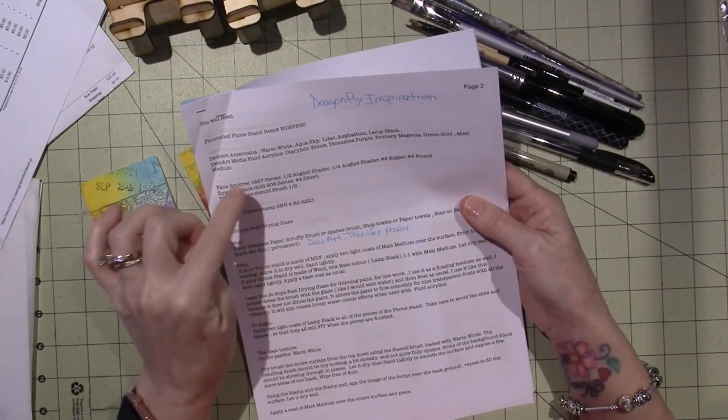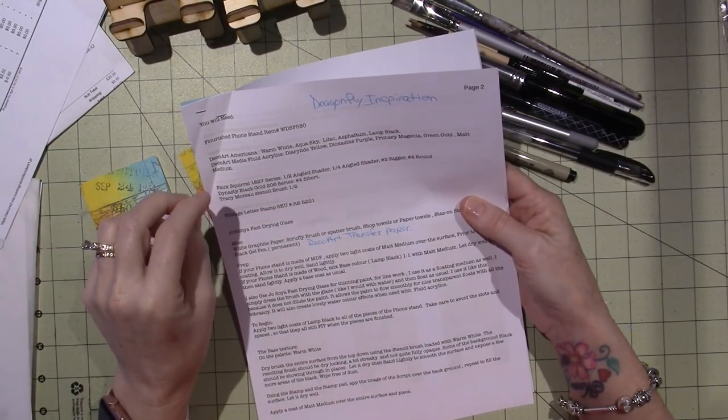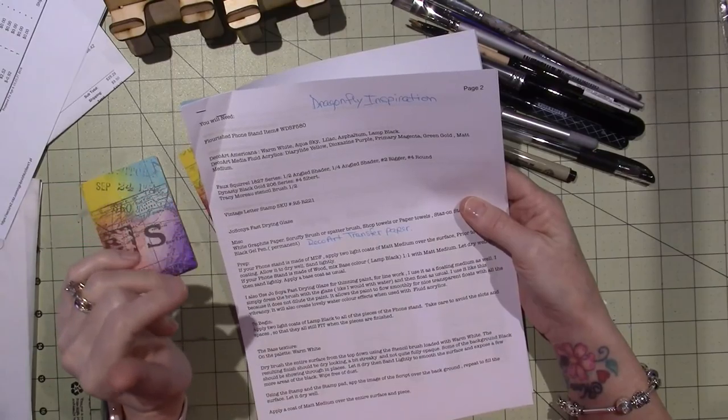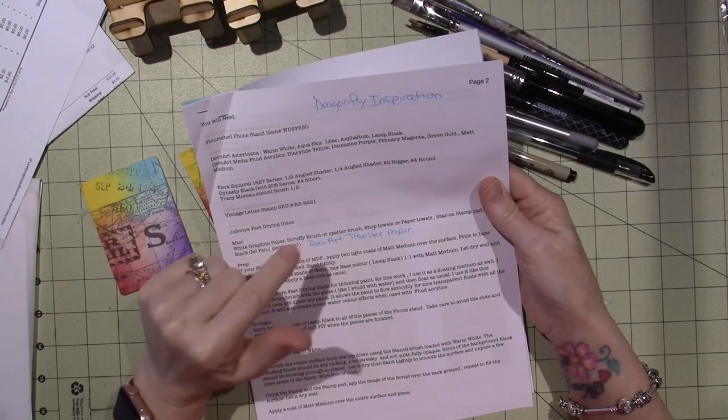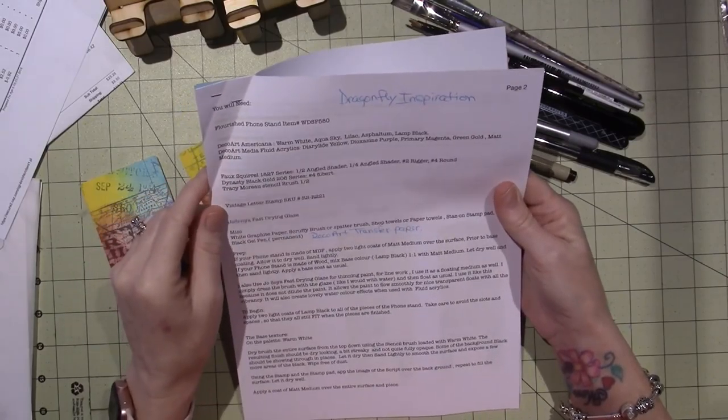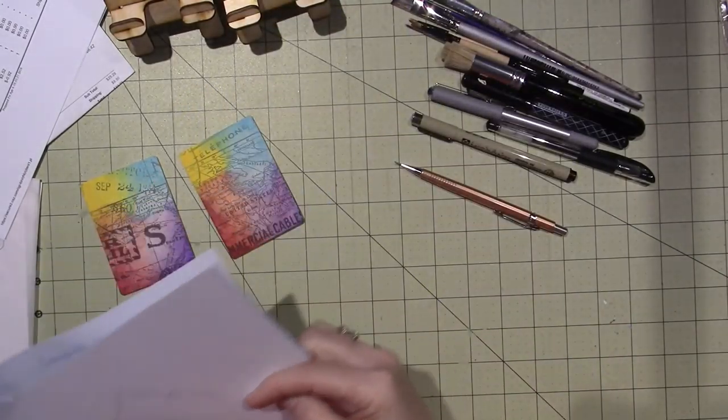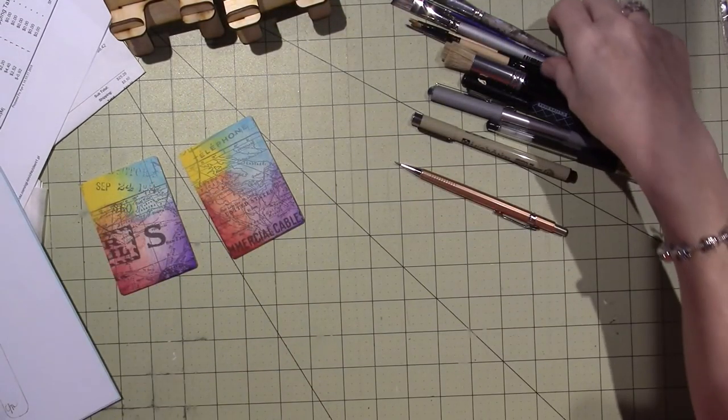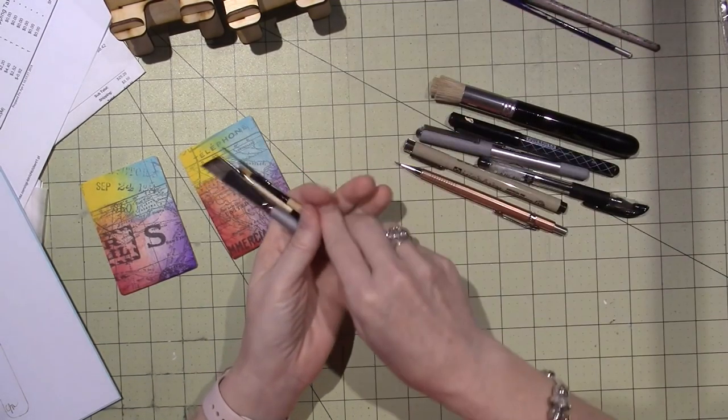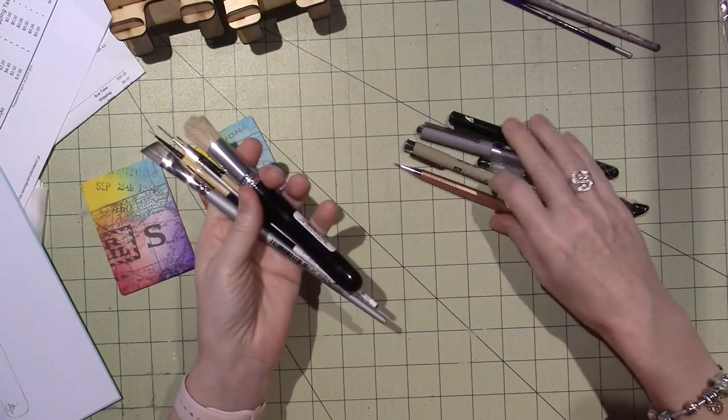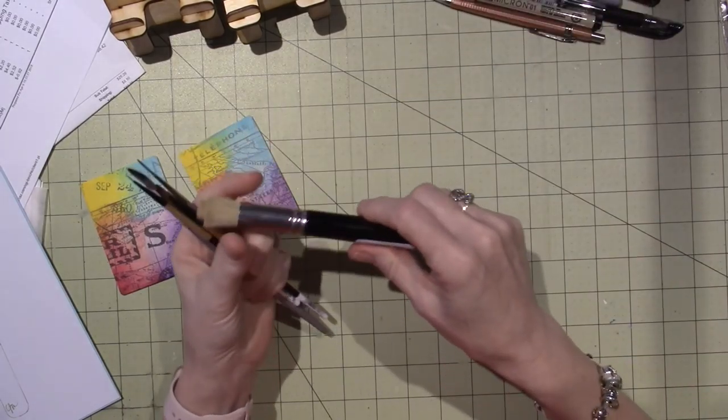But what I did get was some brushes, and I did get the black jelly pen, the gel roll pen that she suggested, and also the phone stands. So let me share the brushes first.